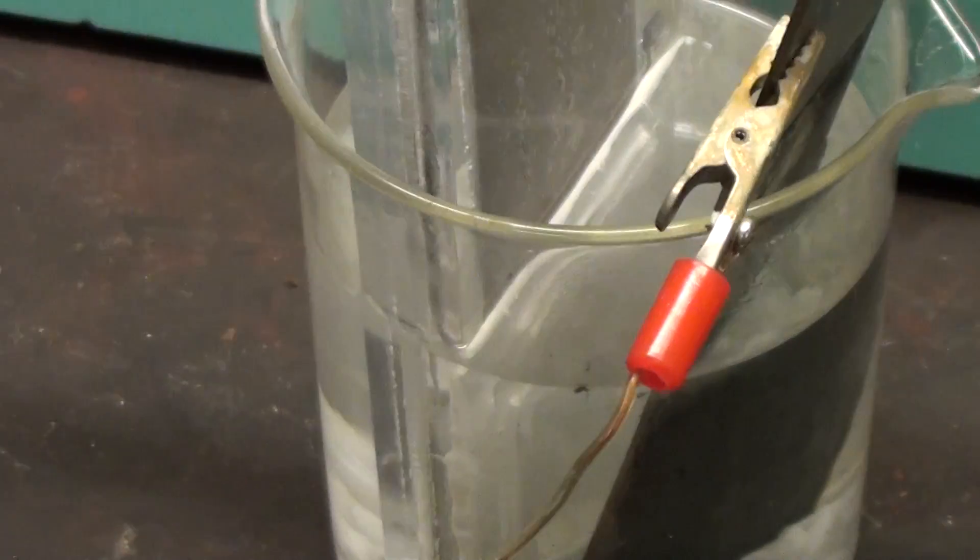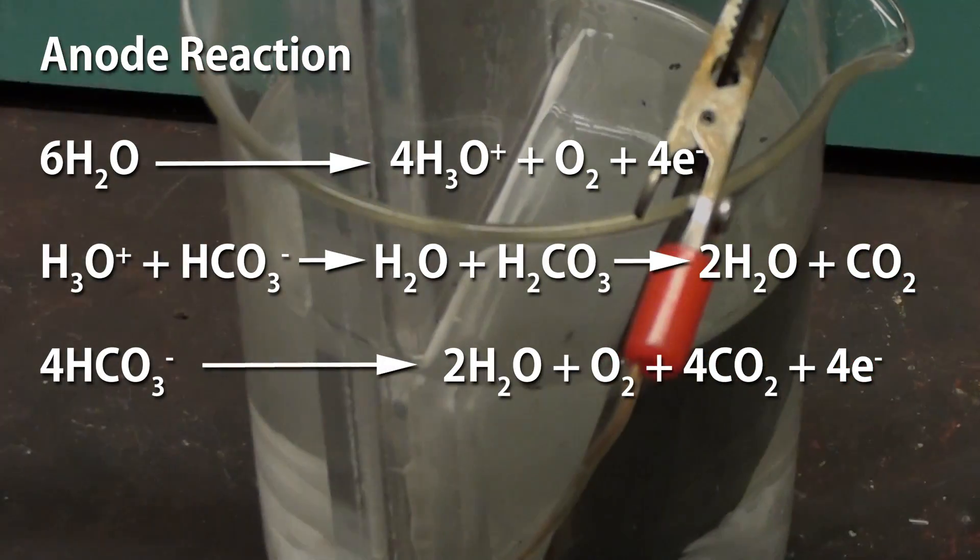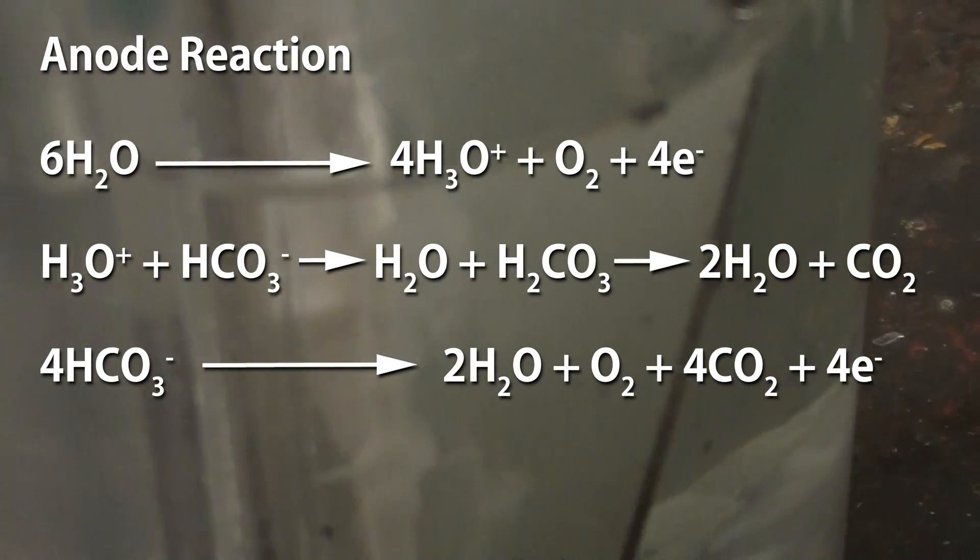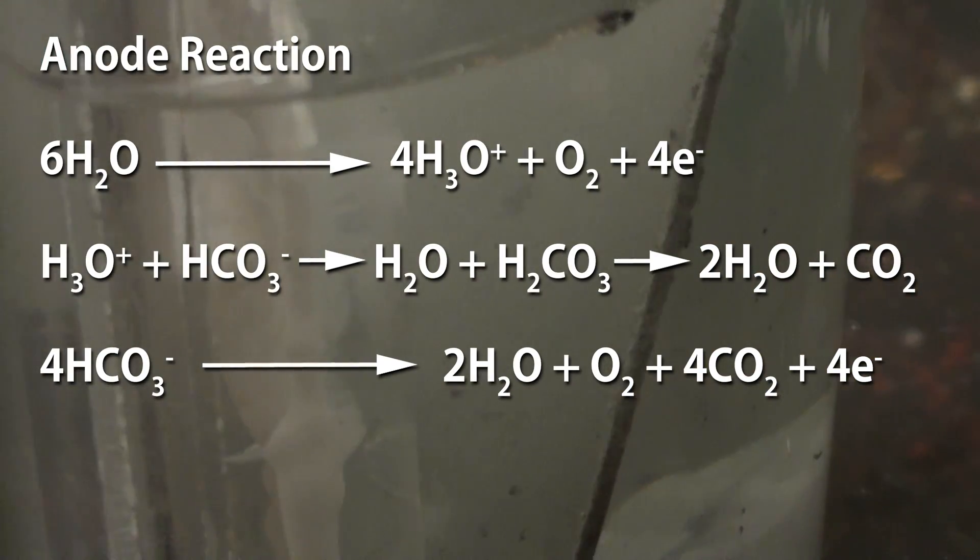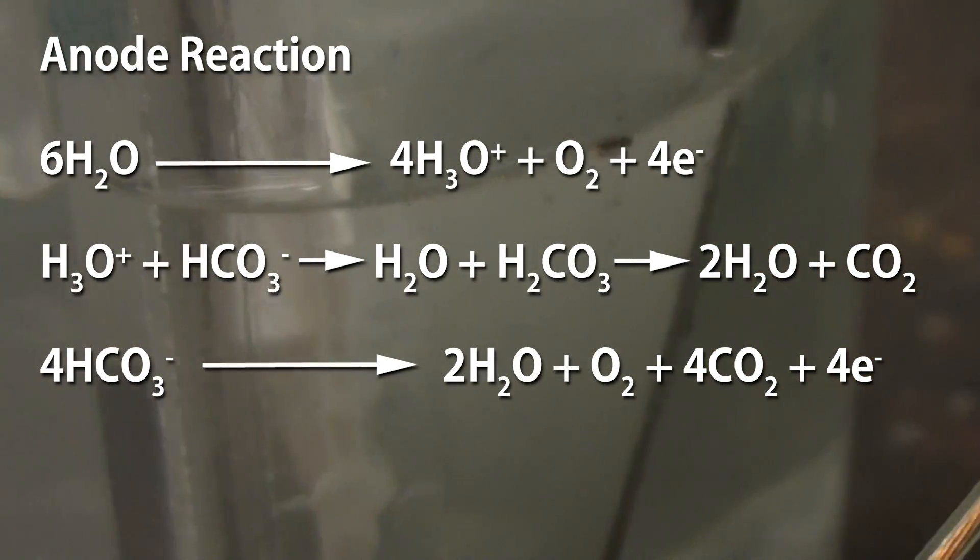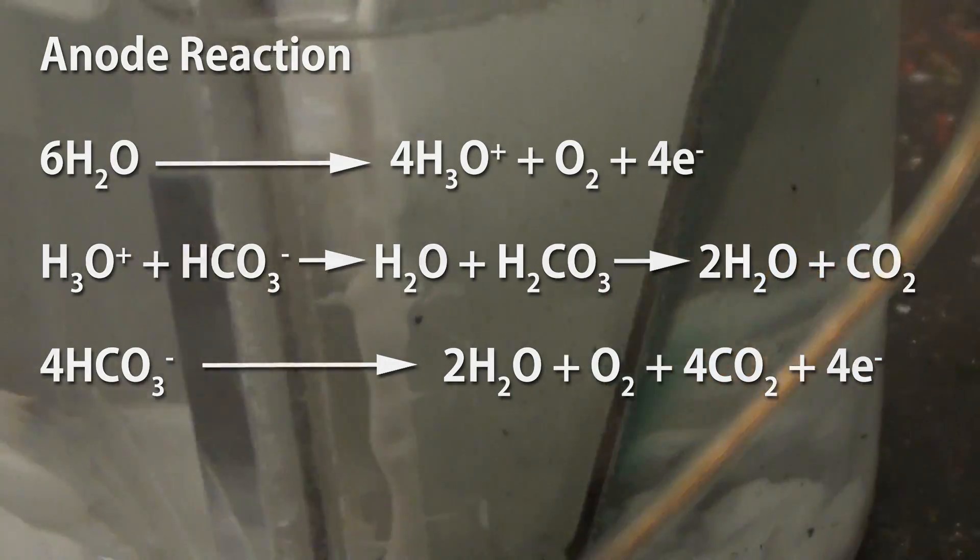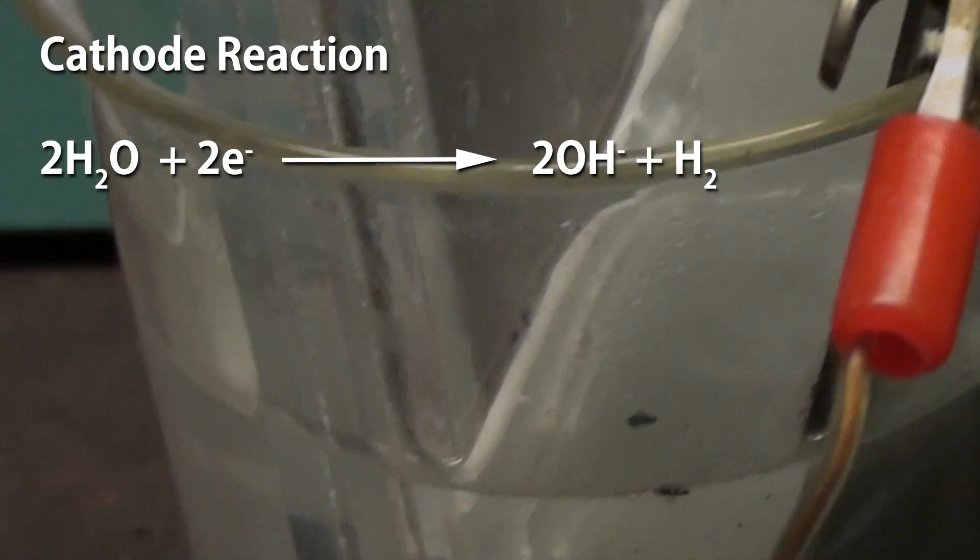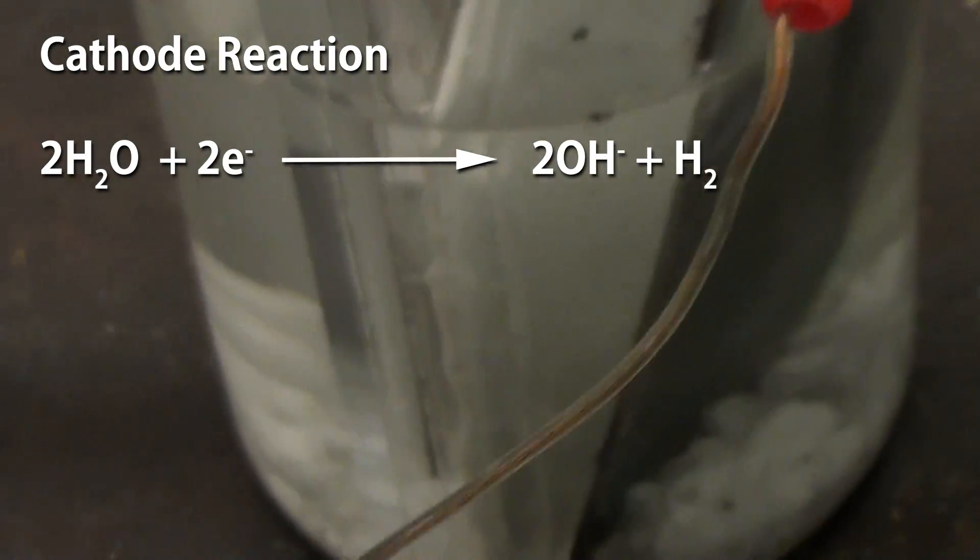So what's happening? At the anode we're electrolyzing water and producing oxygen gas and hydronium ions. These react with the bicarbonate and liberate carbon dioxide as well. So we're releasing oxygen and carbon dioxide at the anode. At the cathode we're electrolyzing water and releasing hydrogen gas and producing hydroxide ions. So far that's all pretty boring.